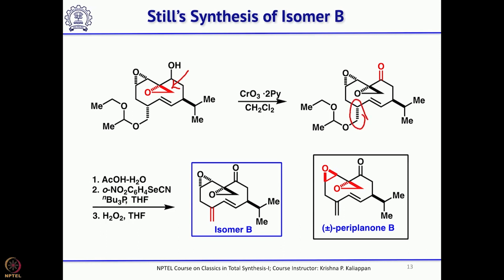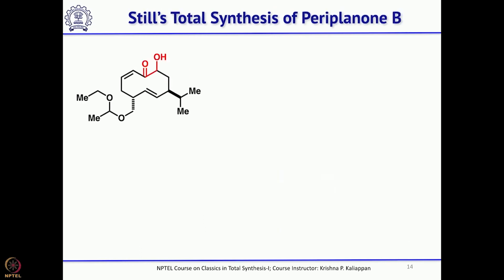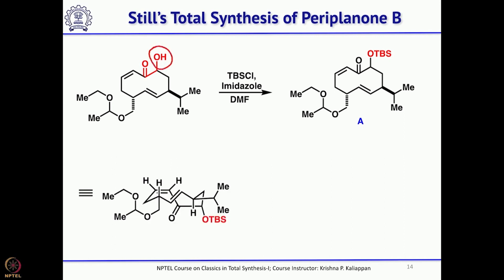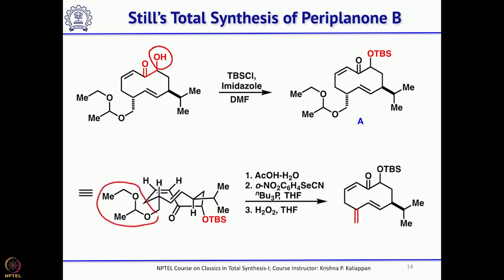Looking at this second isomer, everything is the same except this epoxide — the epoxide here is exactly opposite to that in Periplanone B. So he had to go back again. At this point he decided to protect the hydroxyl as a TBS ether, remove the ethoxyvinyl group, and convert it to the exocyclic double bond first.